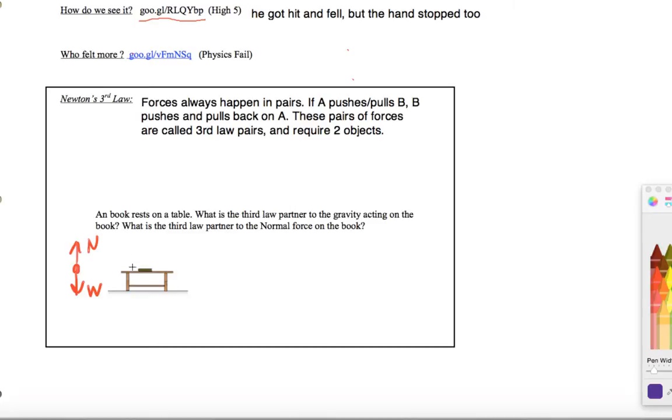I have a normal force on this book, and the table is the thing that's causing that normal force to happen. So the way I really want to properly label my forces, if I'm looking for third law pairs, is that I'm going to call this NBT, normal on the book due to the table. In fact, let's label that.